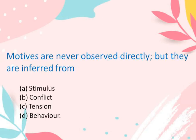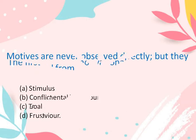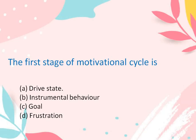Motives are never observed directly, but they are inferred from: Stimulus, Conflict or Tension, or Behavior. The correct answer is Behavior. The first stage of the Motivation Cycle is: Drive State, Instrumental Behavior, Goal, or Frustration. The correct answer is Drive State.